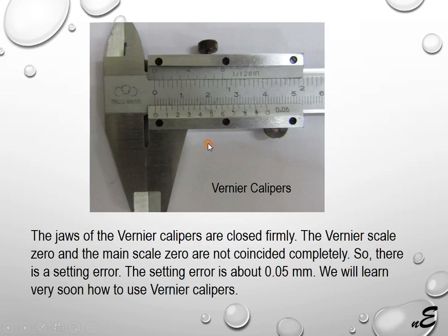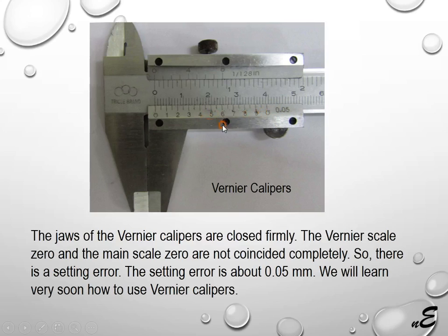There is a vernier caliper used to measure length. Initially, the jaws are firmly closed with no gap between them, so this zero and that zero should coincide. But there is a little gap equal to 1 unit, and 1 unit equals 0.05 millimeter — the resolution of this instrument. So it has a systematic error or setting error equal to 0.025 millimeter.